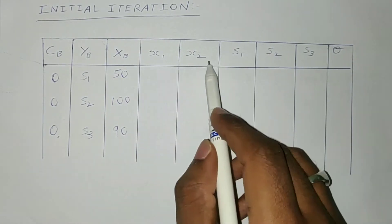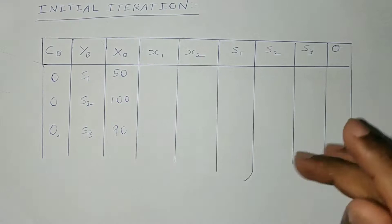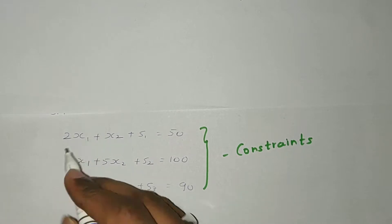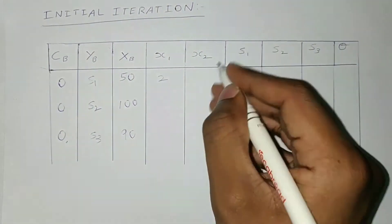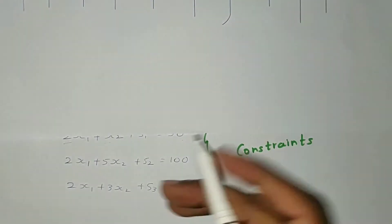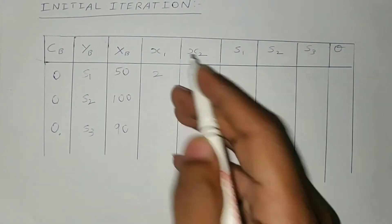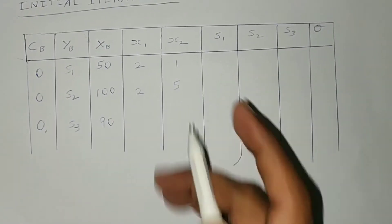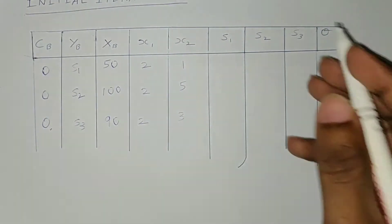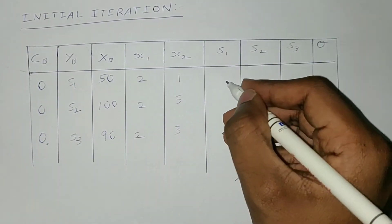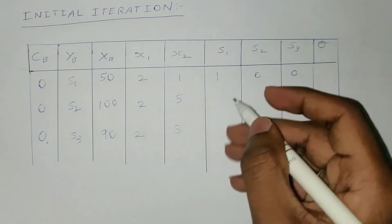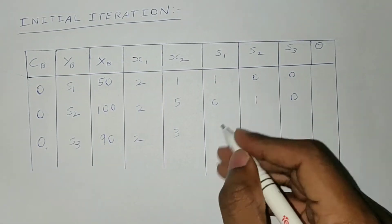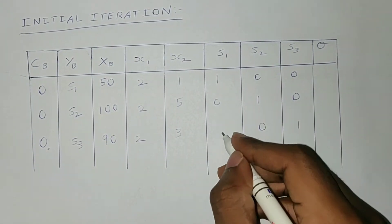x1 and x2 columns contain the coefficients of x1 and x2 in the constraints. In the first constraint they are 2 and 1; in the second, 2 and 5; in the third, 2 and 3. For the slack variable columns: in the first constraint s1 is 1 and s2, s3 are 0; in the second, s2 is 1 and s1, s3 are 0; in the third, s3 is 1 and s1, s2 are 0.